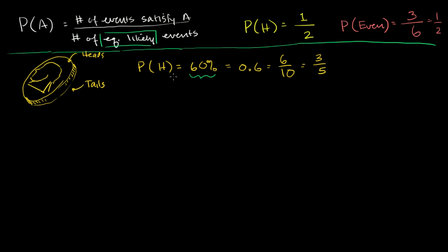It's unclear how I determined that this is 60%. Maybe I ran a computer simulation, or maybe I know exactly all the physics and can completely model how it falls every time. Or maybe I've actually just run a ton of trials — I flipped the coin a million times and 600,000 of those came up heads. Then we can make a similar statement about tails.